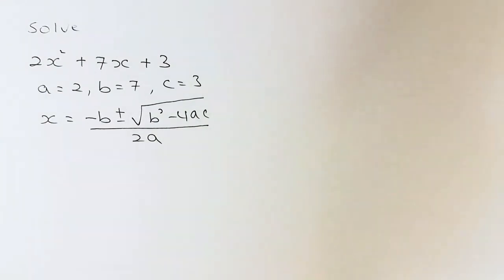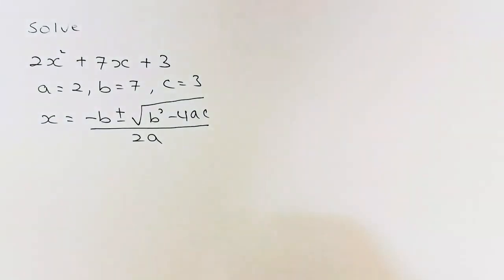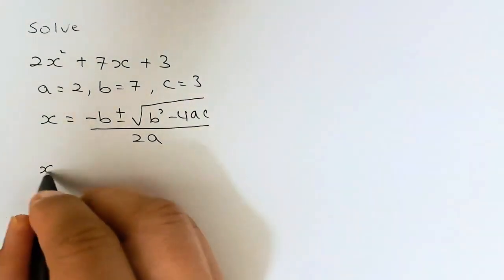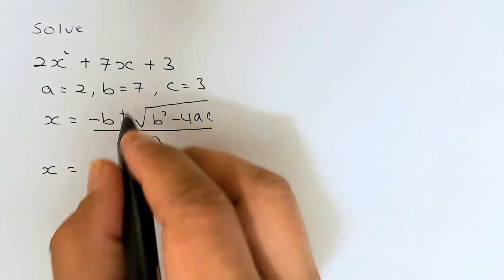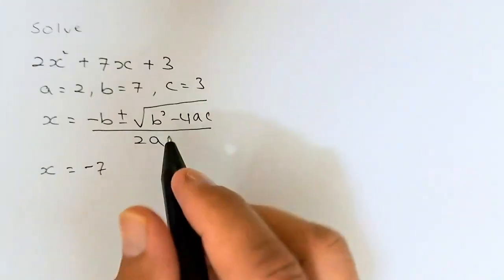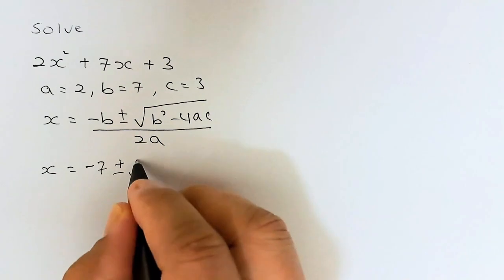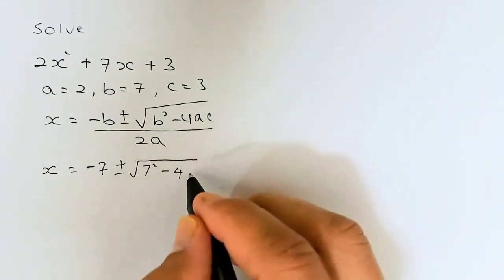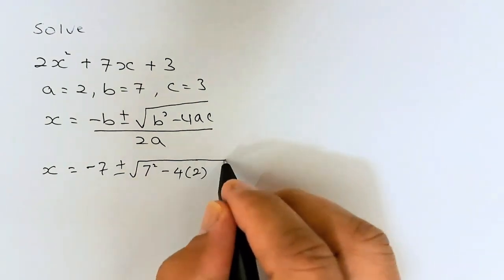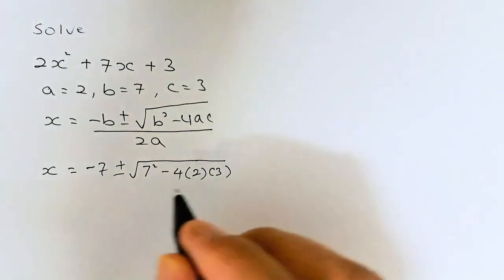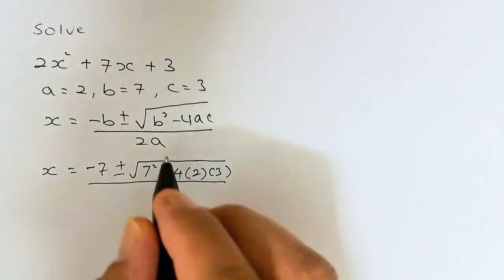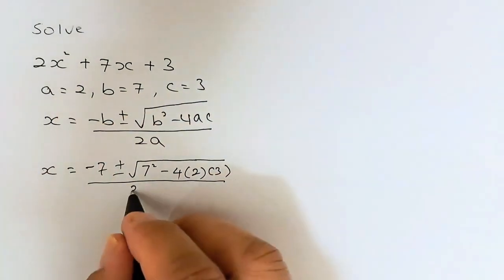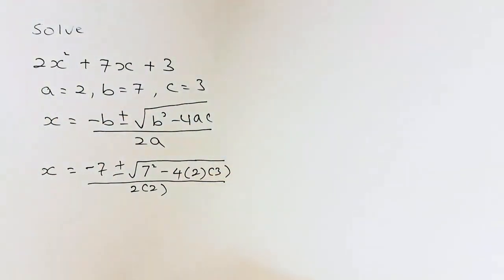Once we have a, b and c, we are going to substitute the values into the formula. So to find x, instead of minus b we put minus 7, plus or minus the square root of b squared — that's 7 squared — minus 4 times a, which is 2, times c, which is 3. And we divide that by 2a, and since a is 2, it will be 2 multiplied by 2.